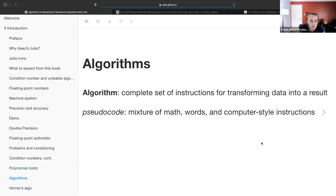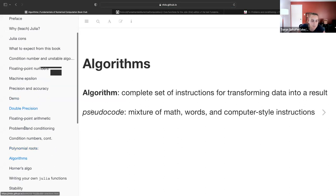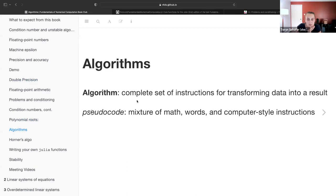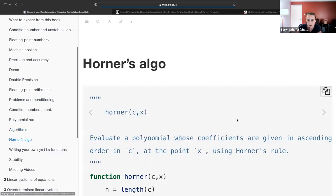When we start getting into algorithms, this is a complete set of instructions for transforming data into a result. Essentially, you're just going to compose a bunch of those operations. Oftentimes, we work with pseudocode where we write down a mixture of math words and computer-style instructions, in your notebook, on your text editor, wherever you like. For the root finding problem, different algorithms have different condition numbers.